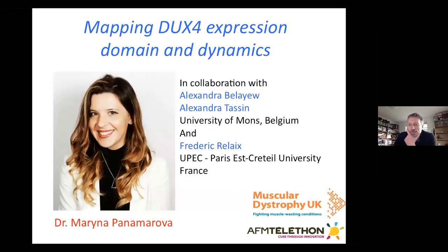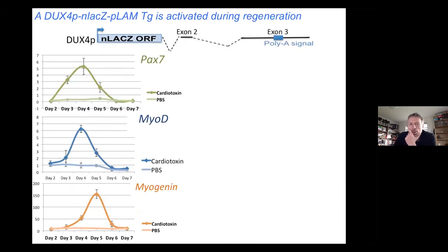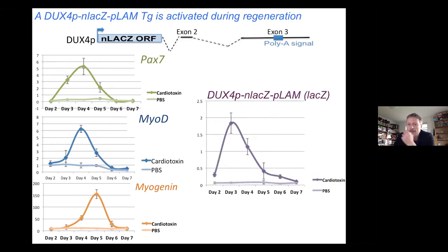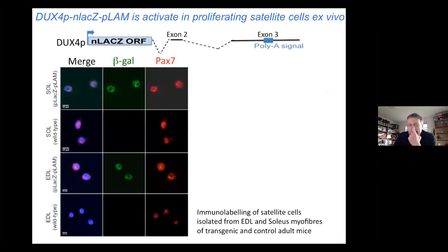We had a look at the regulation of DUX4. We used the DUX4 promoter, a reporter gene, and the rest of the genomic configuration with the polyadenylation signal. After induced muscle regeneration in these mice, as expected, PAX7, myoD, and myogenin go up on the transcriptomic level. DUX4 from the transgene was also being expressed during muscle regeneration. Ex vivo, we got expression of beta-gal from the reporter during satellite cell activation and proliferation, confirming that the endogenous DUX4 gene can be expressed in satellite cells in mouse during regeneration.